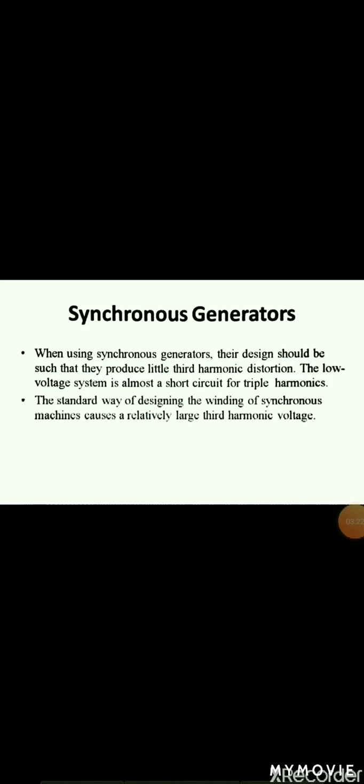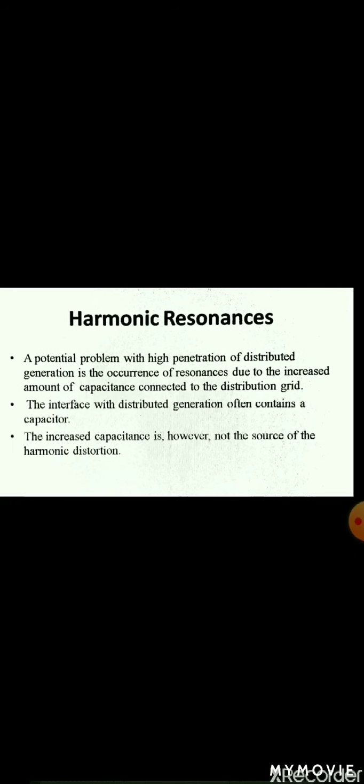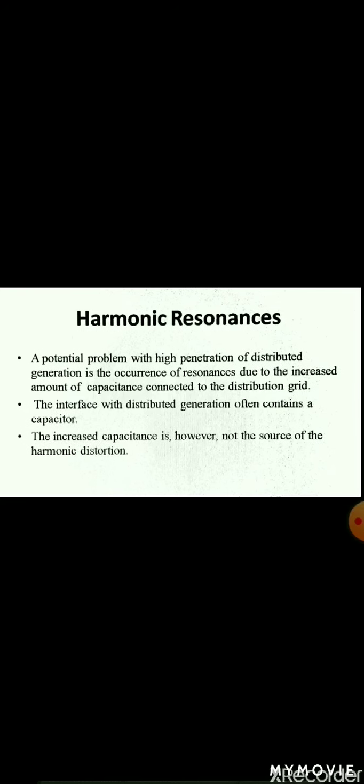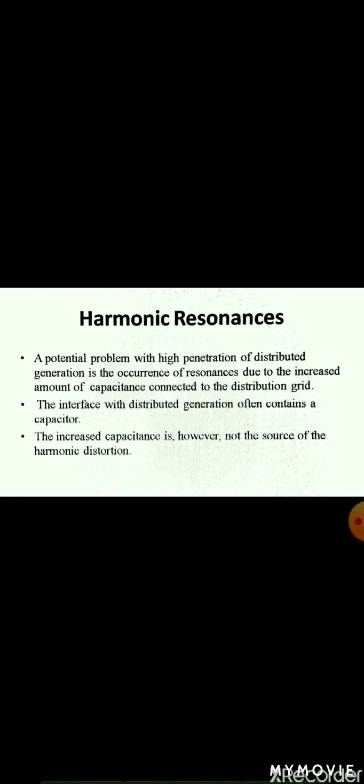Next is synchronous generator. When using synchronous generators, their design should be such that they produce little third harmonic distortion. The low voltage system is almost a short circuit for triple harmonics, which could cause a large third harmonic current with standard synchronous generators. The standard way of designing the winding of synchronous generators causes a large third harmonic voltage, about 10% of the fundamental component, whereas the 5th and 7th harmonic voltages will be around 1%. As the third harmonic component has zero sequence character, it is not transferred through delta connected generator transformer.